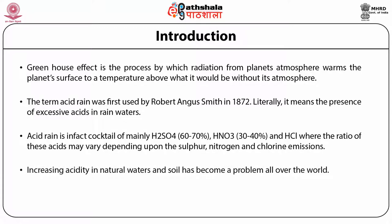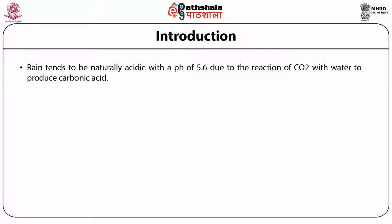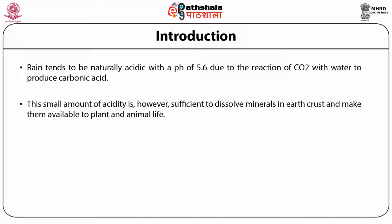Increasing acidity in natural waters and soil has become a problem all over the world. Rain tends to be naturally acidic with a pH of 5.6 due to the reaction of carbon dioxide with water to produce carbonic acid. This small amount of acidity is sufficient to dissolve minerals in the earth's crust and make them available to plants and animals. Other atmospheric substances from volcanic eruptions, forest fires and other natural phenomena also contribute to natural sources of acidity in rain.